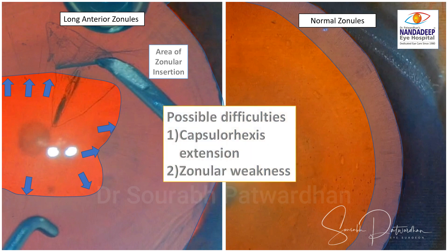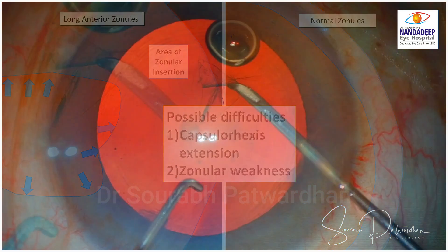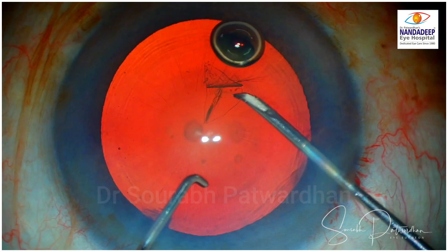The possible difficulties in this case are that the capsular axis may extend when it goes into this zonular area, which is quite anterior. And also if you break more zonules, there is a possibility that zonular weakness may develop. So we have to be more observant and more careful during capsular axis.